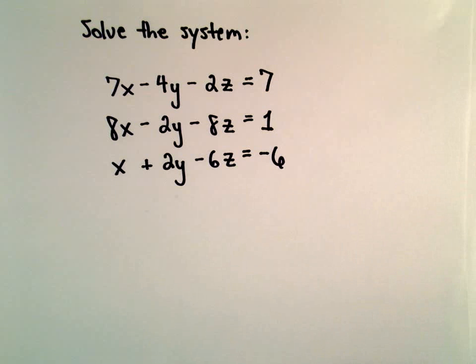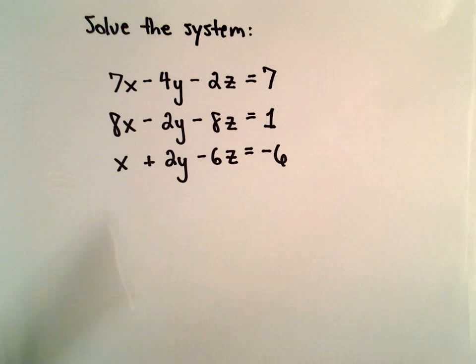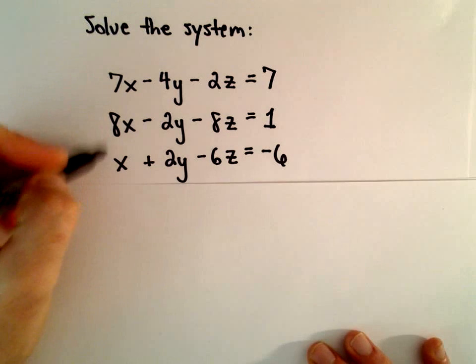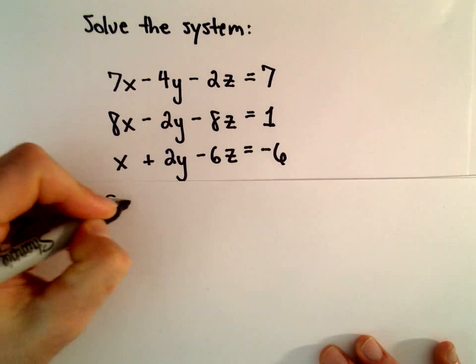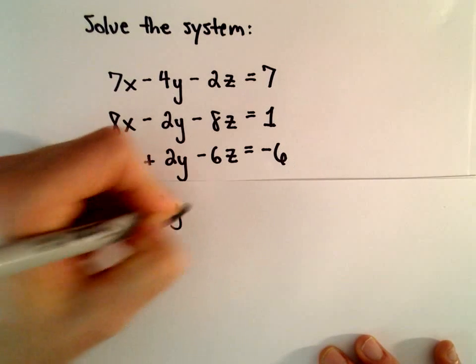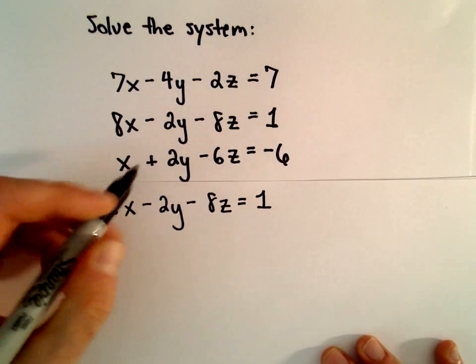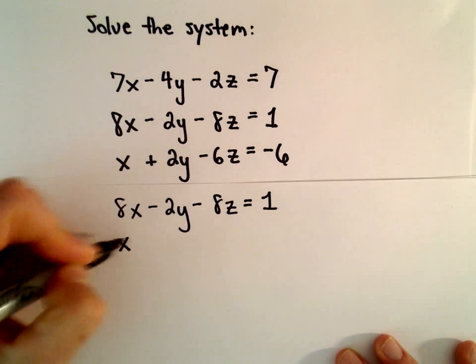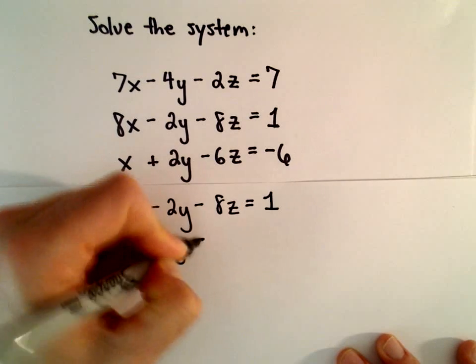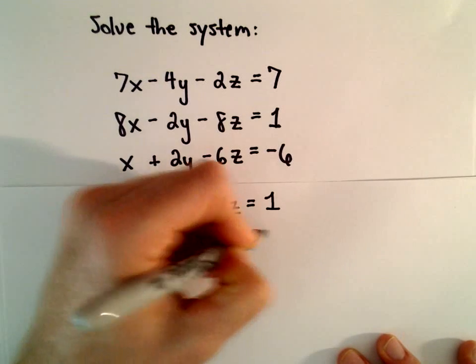So again, what I'm going to try to do is start off by creating a new equation where one of the variables has been eliminated. It looks like if we take our second and third equation, if we add the second and third equation, I see immediately that the terms involving y will cancel out. So that's where I'm going to start.